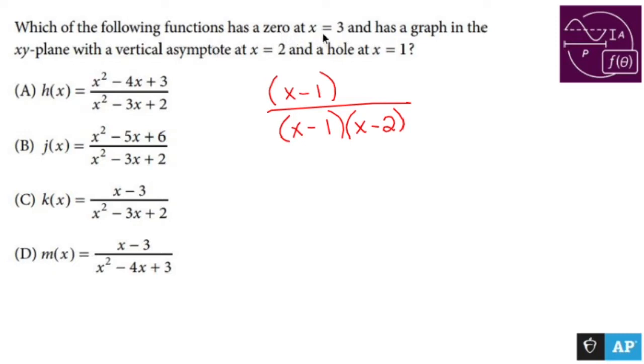If it has a zero at x equals three, that means there's an x minus three living upstairs and nothing like it downstairs. So it looks like what I have to do is foil each of these out and see what I get.